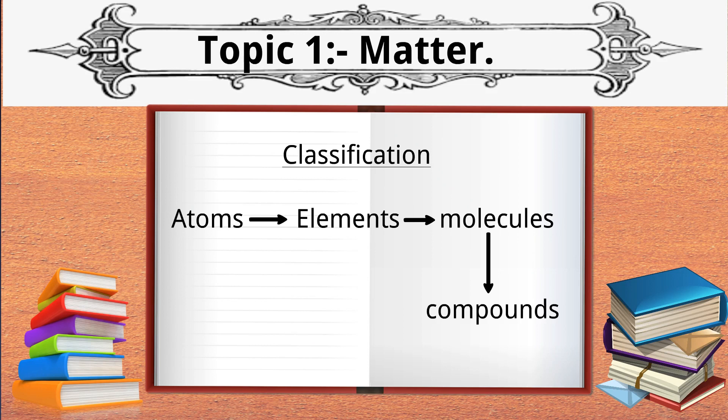Similar atoms combine to form element. Elements combine to form molecules, and molecules combine to form compounds or mixtures. But there is one exception: some elements exist monoatomically, so their atom and molecules are the same. Example: helium, argon, and noble gases. So this was all about matter.